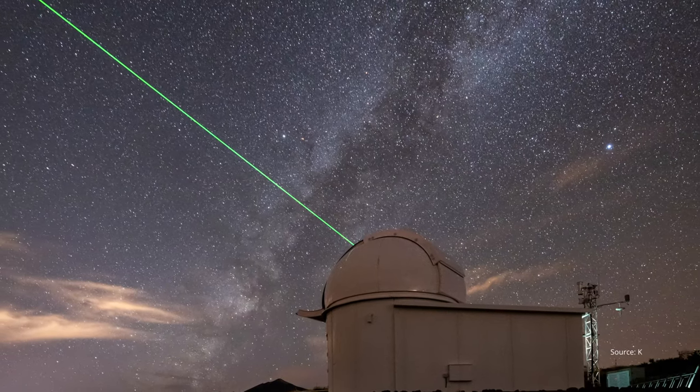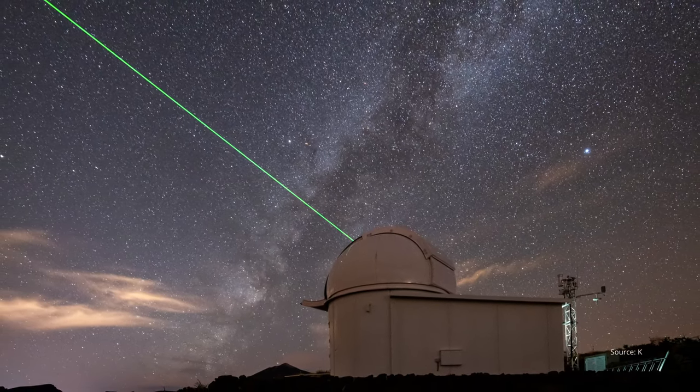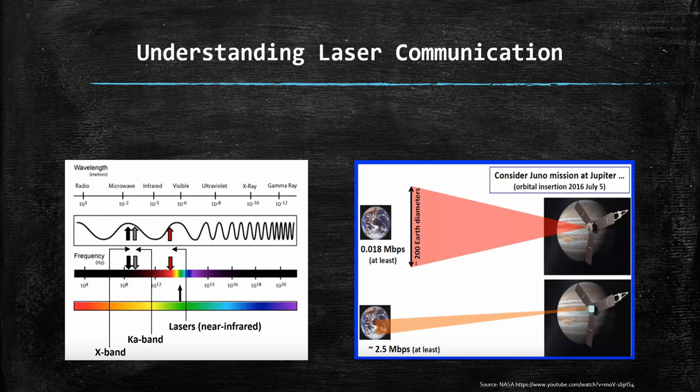Before we dive in, let's understand the working principle of laser communication, or free space optical communication — FSO as others call it. First of all, it's similar to fiber optics, but without the cables. The light is transmitted directly through the atmosphere or the vacuum of space. Laser links usually use the near-infrared spectrum, typically spanning from 800 to 1600 nanometers. This spectral range is strategically selected to minimize the absorption and scattering of the laser beam, enabling efficient transmission through the atmospheric layers.